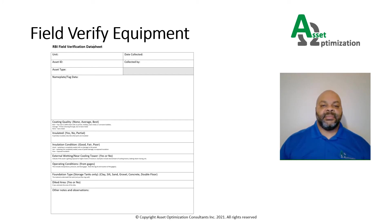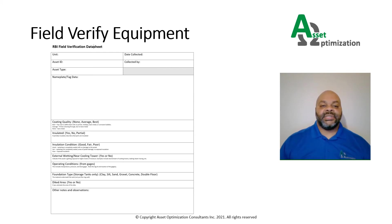Some of the information that can be recorded is the nameplate data, the observed coating quality, whether it is insulated, what type of insulation and the condition of the insulation, whether it is near a cooling tower or near an area where there is constant external wetting, and the operating conditions seen on gauges — pressures and temperatures. For storage tanks: what type of foundation does it have, is it diked, and what is the estimated area of the dike? Any other observations should be recorded if they may affect the damage mechanism review or the risk analysis.